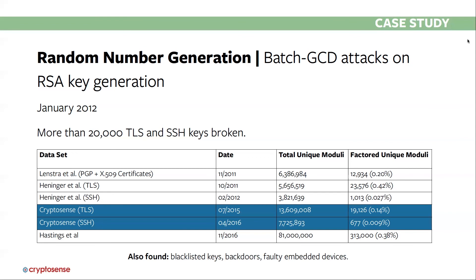Other things go wrong with random number generation as well. Sometimes this results in the same key being used across many devices and those keys become known. And sometimes random number generators are actually deliberately backdoored. There are many issues out there with random number generation.